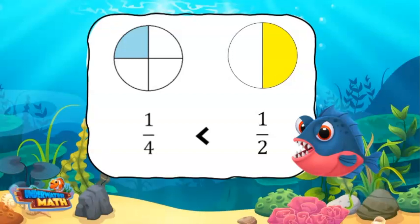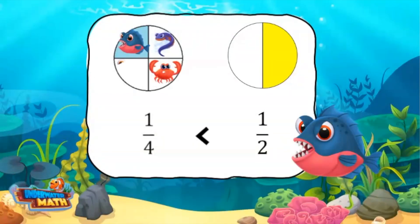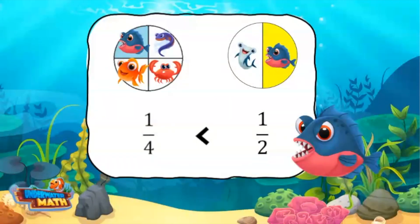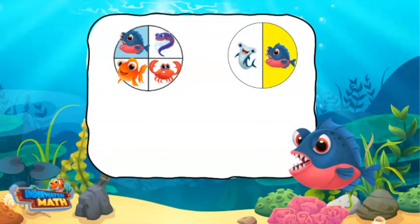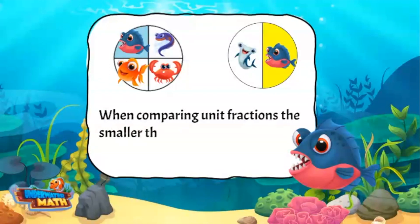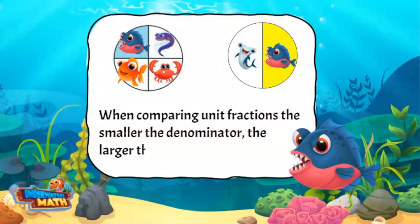Let me show you why. Imagine our model is a delicious pizza. In the first model, we must share equal parts with four fish friends. In the second model, we only have to share the pizza with two fish friends. Here is the secret to comparing unit fractions: the smaller the denominator, the larger the fraction.